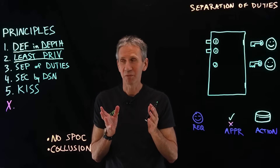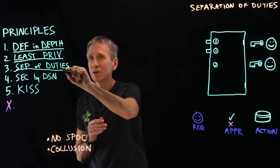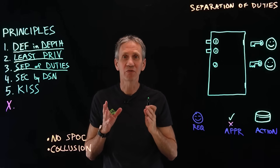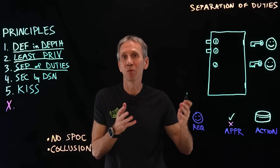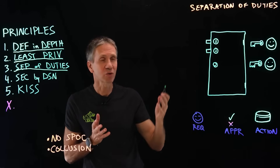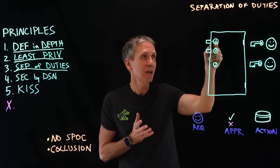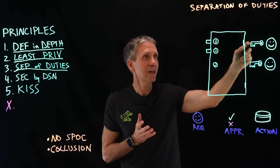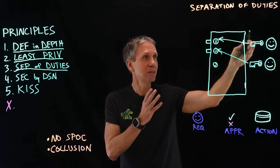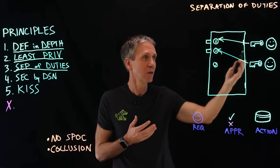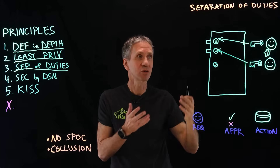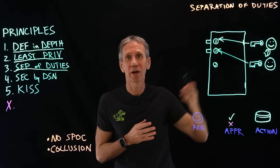The third principle is separation of duties — we won't have any single point of control. What we're trying to do is force collusion between two or more bad actors in order to compromise the system, so no single person can create the compromise. A physical example: a door with two locks, where one person has the key to one lock and another person has the key to the other. Neither can open the door alone, but the two of them cooperating can — that's separation of duties.